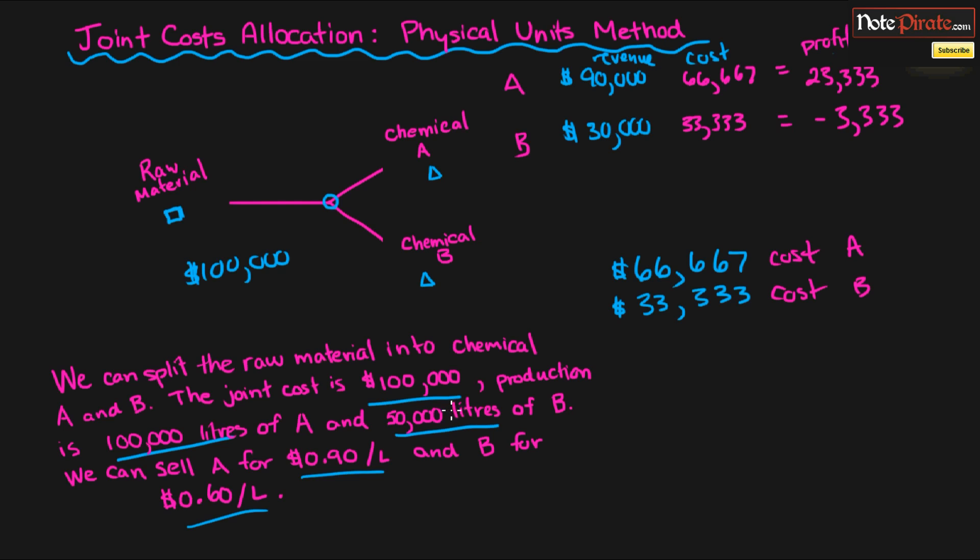And we'll go over this exact same example, but we'll do it for the sales method and the net realizable value method to make sure that product A and product B both yield a certain amount of profit, because they have to yield profit. So that is how we do the physical units method. We'll talk about the next method, which is the sales method, in the next video. Hopefully you understand it, and I'll see you in the next one.